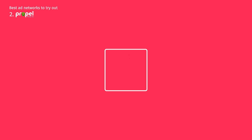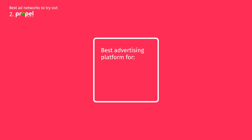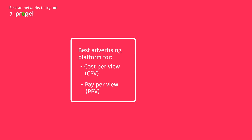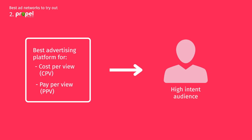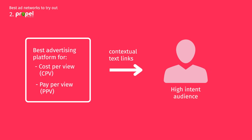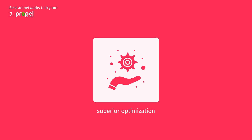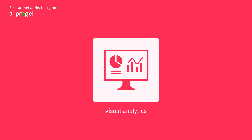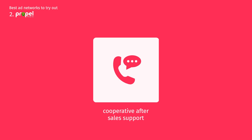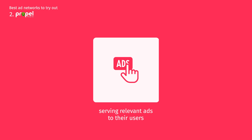Propel Media is widely regarded as the best advertising platform for CPV or PPV, known for reaching a high-intent audience via contextual text links and display ads. They offer an easy-to-use interface with superior optimization abilities and visual analytics, and are known for their cooperative after-sales support for new customers in serving relevant ads to their users.